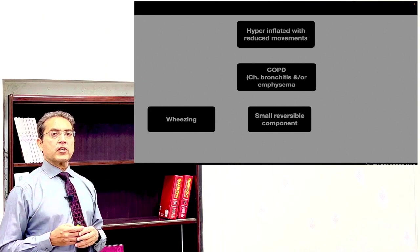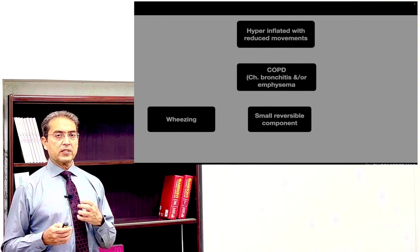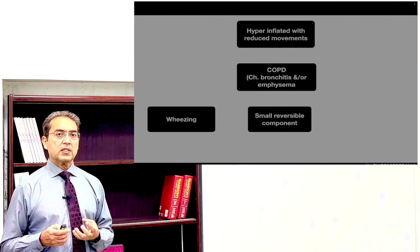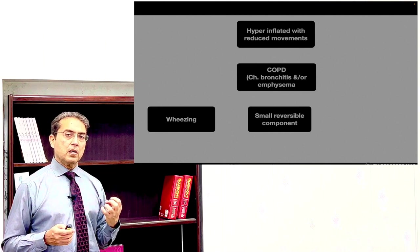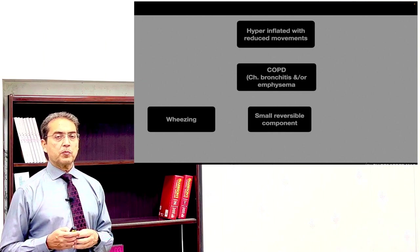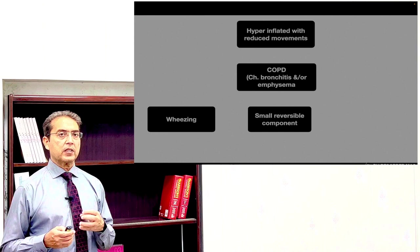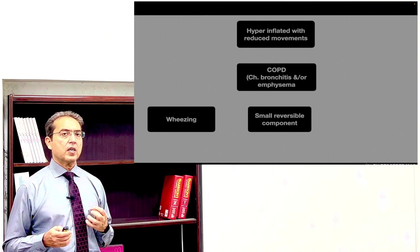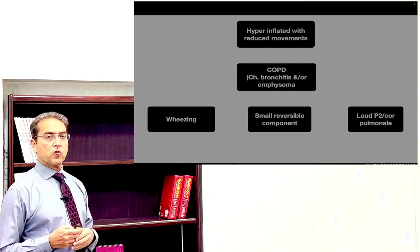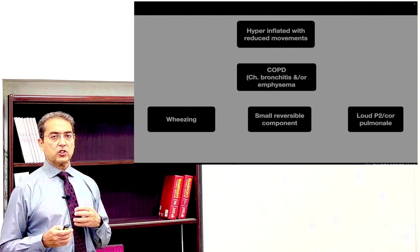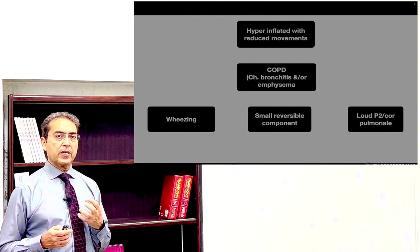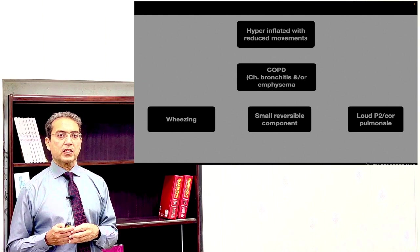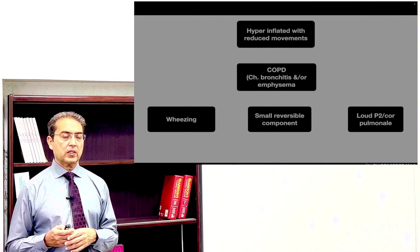There is a very small reversible component in COPD. If you nebulize the patient with salbutamol and then do pulmonary function testing again, you find there is small reversibility — a fixed obstruction with minimal reversibility. Also look for features of cor pulmonale: the patient may have raised JVP, loud P2, and dependent edema in long-standing chronic obstructive airway disease.